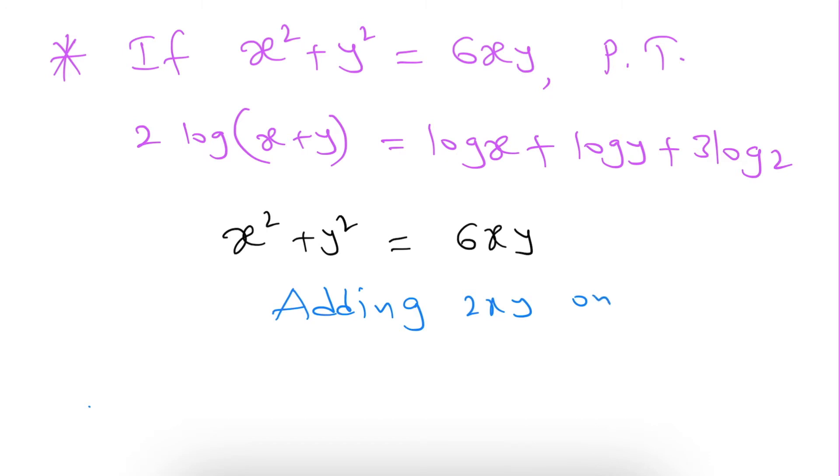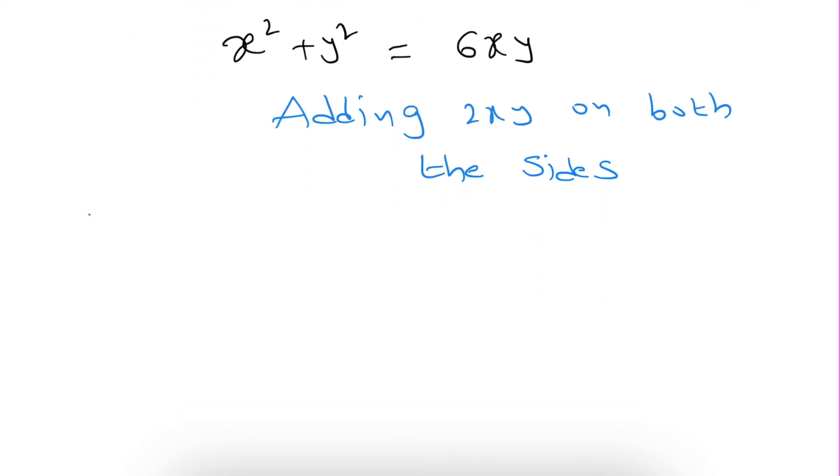Adding 2xy on both the sides. Then it will become x square plus y square plus 2xy equals 6xy plus 2xy. Both the sides I am adding 2xy.